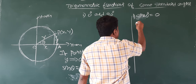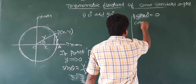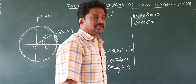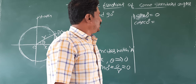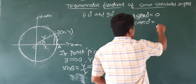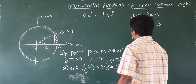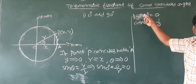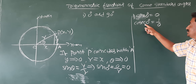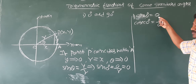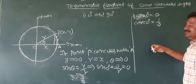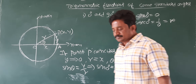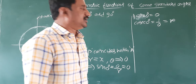Reciprocal of sine is cosecant. So cosecant 0 degree is the reciprocal of 0, which is 1 by 0. Number by zero is infinity. So cosecant 0 degree is infinity.